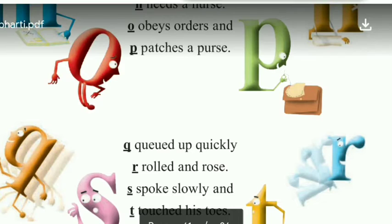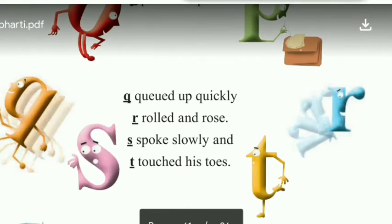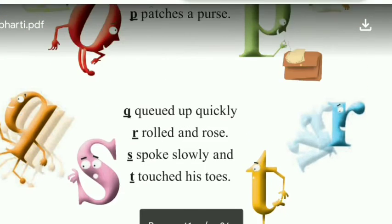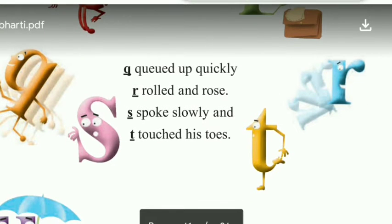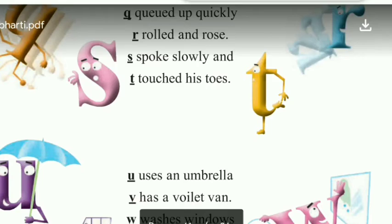Q queues up quickly. Letter Q line mein hai. Queue ka matlab hota hai line. R rolls a rose. Letter R kya kar raha hai, rose ko roll kar raha hai, jise ham gulab bolte hai. S speaks slowly. Letter S dheere dheere baat kar raha hai. T touches his toes. Letter T kya kar raha hai, apne legs ko, apne toes ko touch kar raha hai.